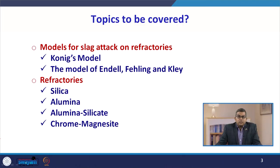In this particular lecture, we are going to discuss various models for slag attack on refractories, like Koenig's model, the model of Endel, Fehling and Klee. Apart from this, we will discuss various refractories including silica, alumina, alumina silicate, chrome, and magnesite.